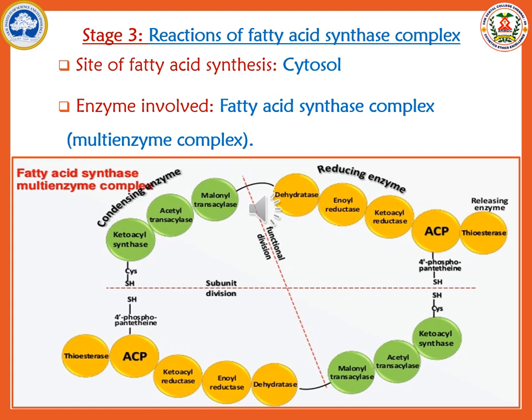We have now come to stage three: the reactions of the fatty acid synthase complex. This takes place in the cytoplasm. The fatty acid synthase complex is a multi-enzyme complex present exclusively in the cytoplasm to synthesize fatty acids. This enzyme is a dimer — it has two monomer chains, and each monomer consists of seven enzyme activities and one ACP molecule. Three enzymes perform condensation reactions, two to three enzymes perform reducing reactions, and one is the releasing enzyme.